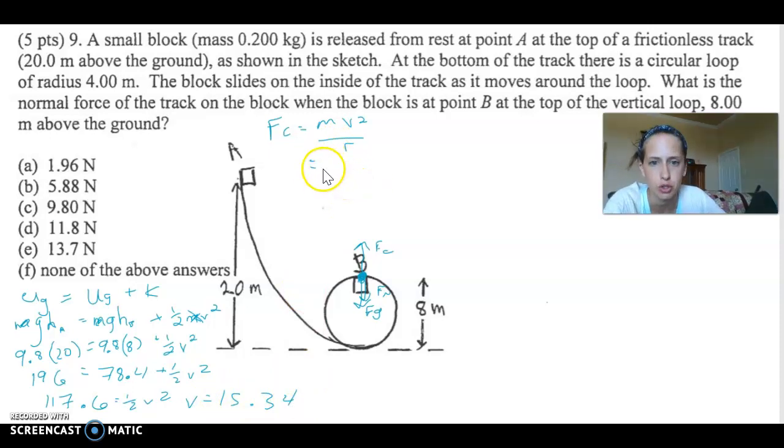So let's plug that in here to find our centripetal force. The mass is 0.2, the velocity is 15.34, and the radius is 4. Be sure you square that. Times 0.2, divided by 4. That's 11.76.